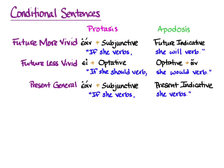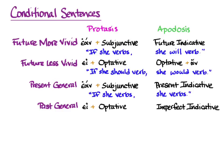Now we'll do the Past General, and that tells you what always happened when the if-clause was true. It doesn't necessarily tell you whether it was true, but it's sure about what happened every time the if-clause was true. The pattern is εἰ plus the optative, could be present or aorist, and then the apodosis has the imperfect indicative. You translate: 'if she verbed, she verbed.'